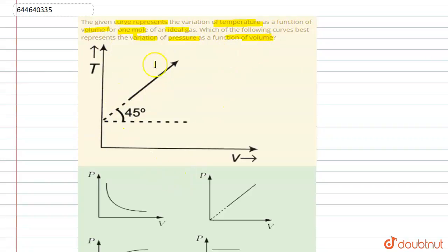So from this T versus V graph, if you find the equation of this straight line, we can know. We know that this is a straight line of constant slope.